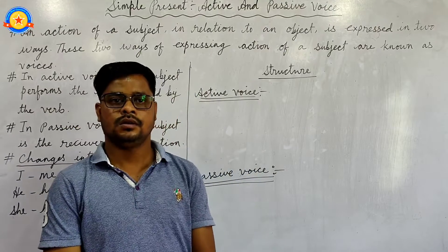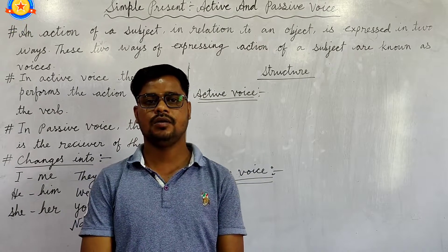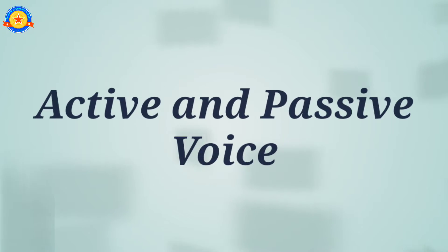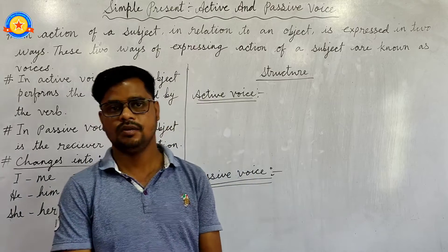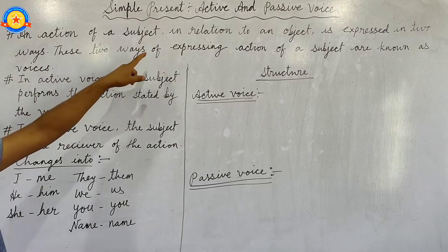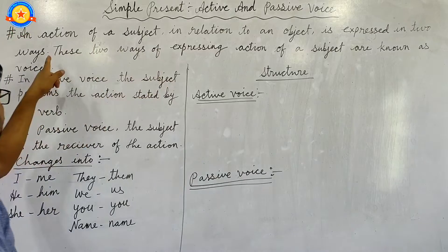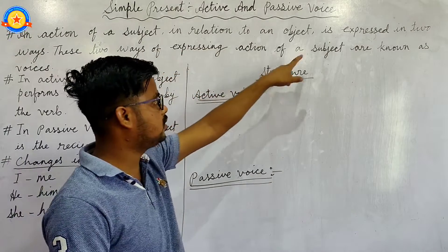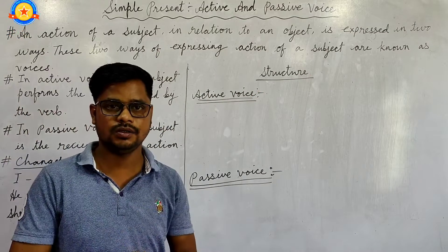Hello everyone, welcome back once again. Today we are going to learn about active and passive voice. An action of a subject in relation to an object is expressed in two ways. These two ways of expressing the action of a subject are known as voices — that means active and passive voice.